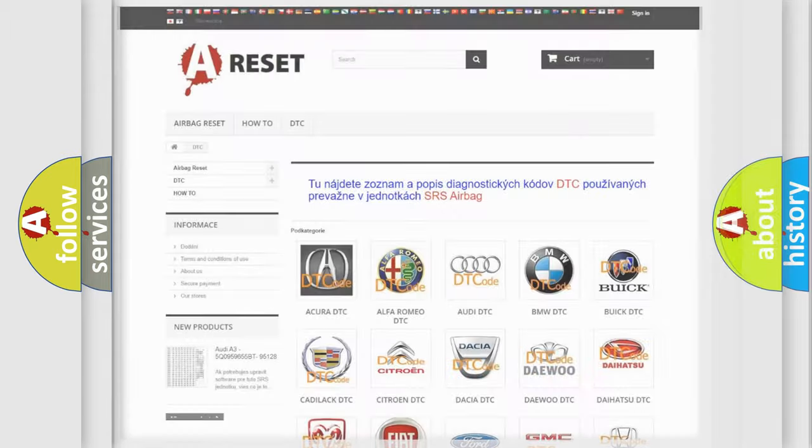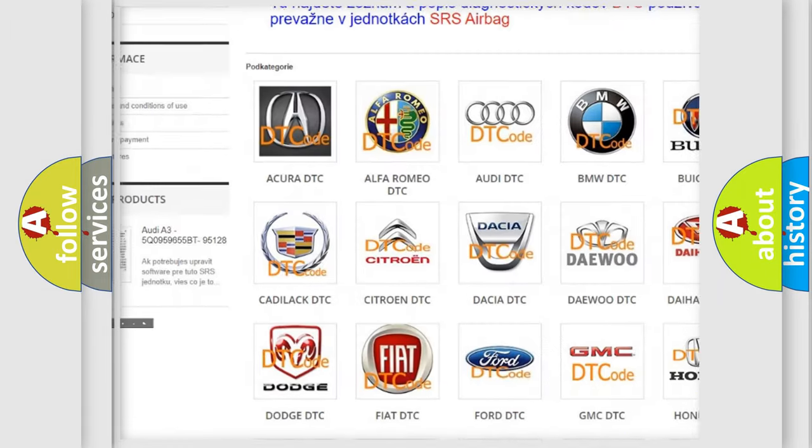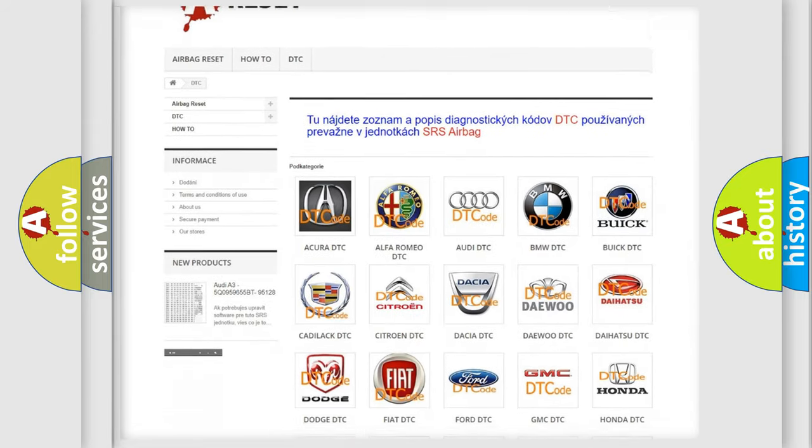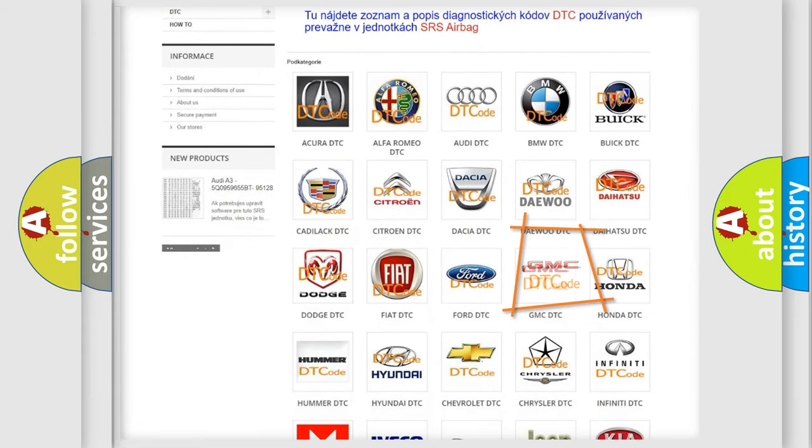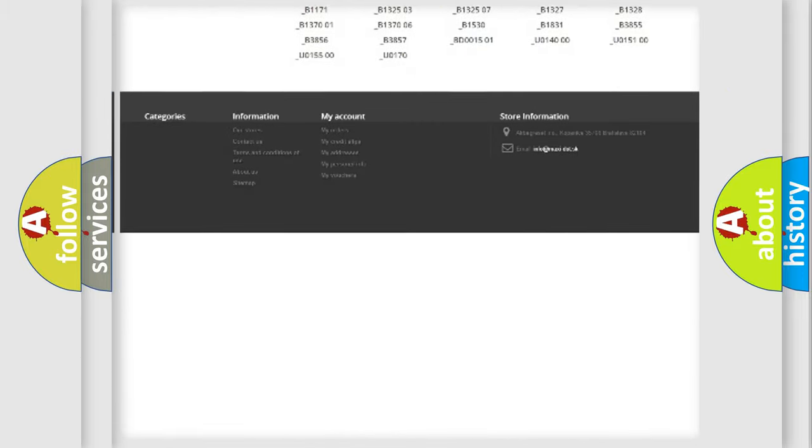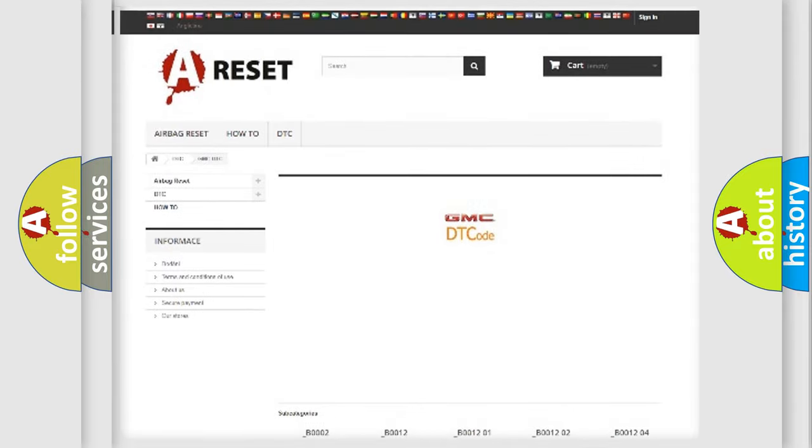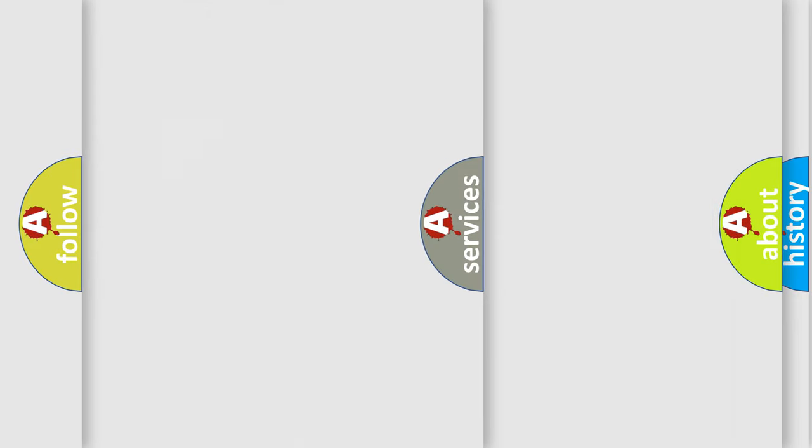Our website airbagreset.sk produces useful videos for you. You do not have to go through the OBD2 protocol anymore to know how to troubleshoot any car breakdown. You will find all the diagnostic codes that can be diagnosed in GMC vehicles, and many other useful things.